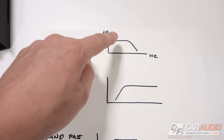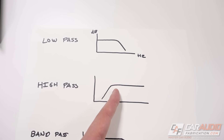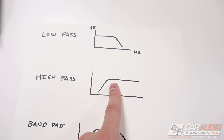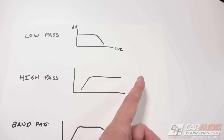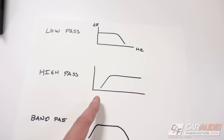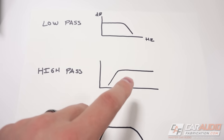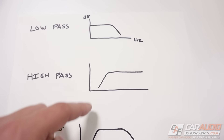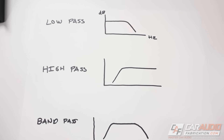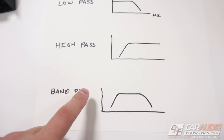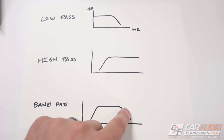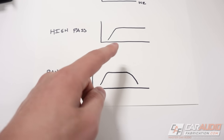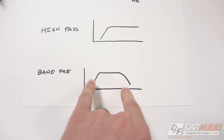A high pass crossover is basically the opposite of low pass. At a certain value, we're only allowing frequencies higher than that to go past — everything below is cut. For example at 100 hertz, we allow everything above 100 hertz to pass and cut below. A high pass is used for a tweeter, allowing everything above a certain value to reach it while limiting bass frequencies that could damage it. The final type is a band pass, which is a combination of both high pass and low pass, used for a mid-range speaker so it plays neither subwoofer nor tweeter frequencies.